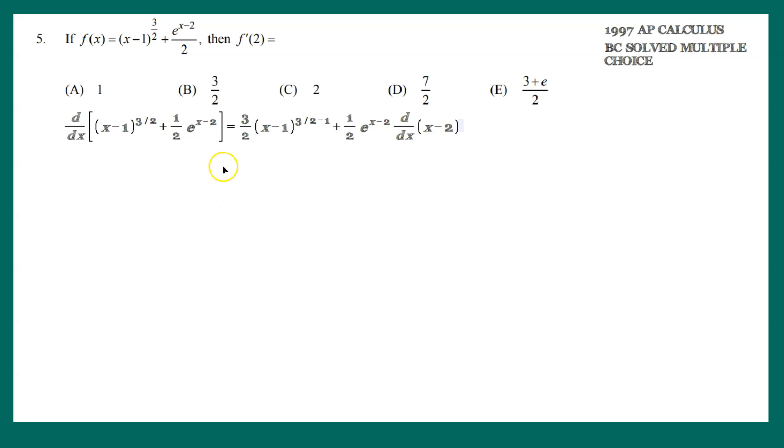In other words, you would have to multiply this by the derivative of that x minus 2 still. Let me continue down below here. Next piece then would be 3 halves, x minus 1. This would be 3 over 2 minus 2 over 2, plus 1 half, and then e raised to the x minus 2. The derivative of x minus 2 is just 1.